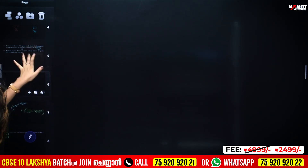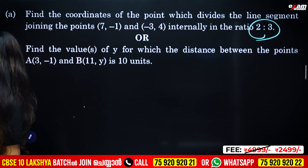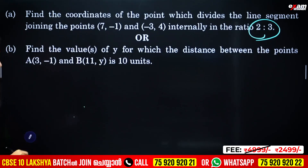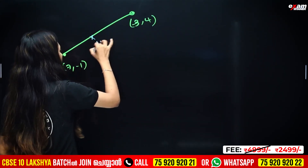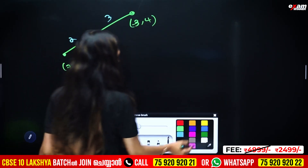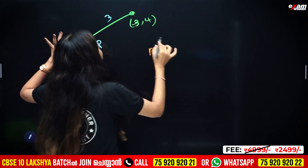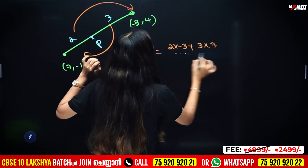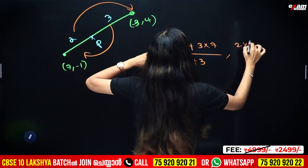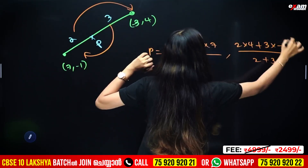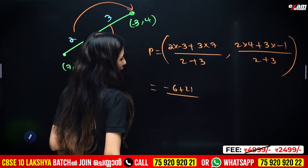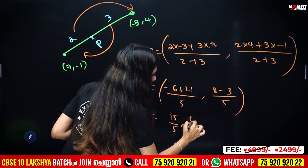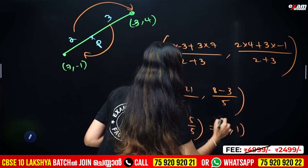Here the points are (7, -1) and (-3, 4), dividing in ratio 2:3. Applying the formula: x = (2 × minus 3 + 3 × 7) / (2 + 3) = (minus 6 + 21) / 5 = 15/5 = 3. y = (2 × 4 + 3 × minus 1) / (2 + 3) = (8 minus 3) / 5 = 5/5 = 1. So the point is (3, 1).